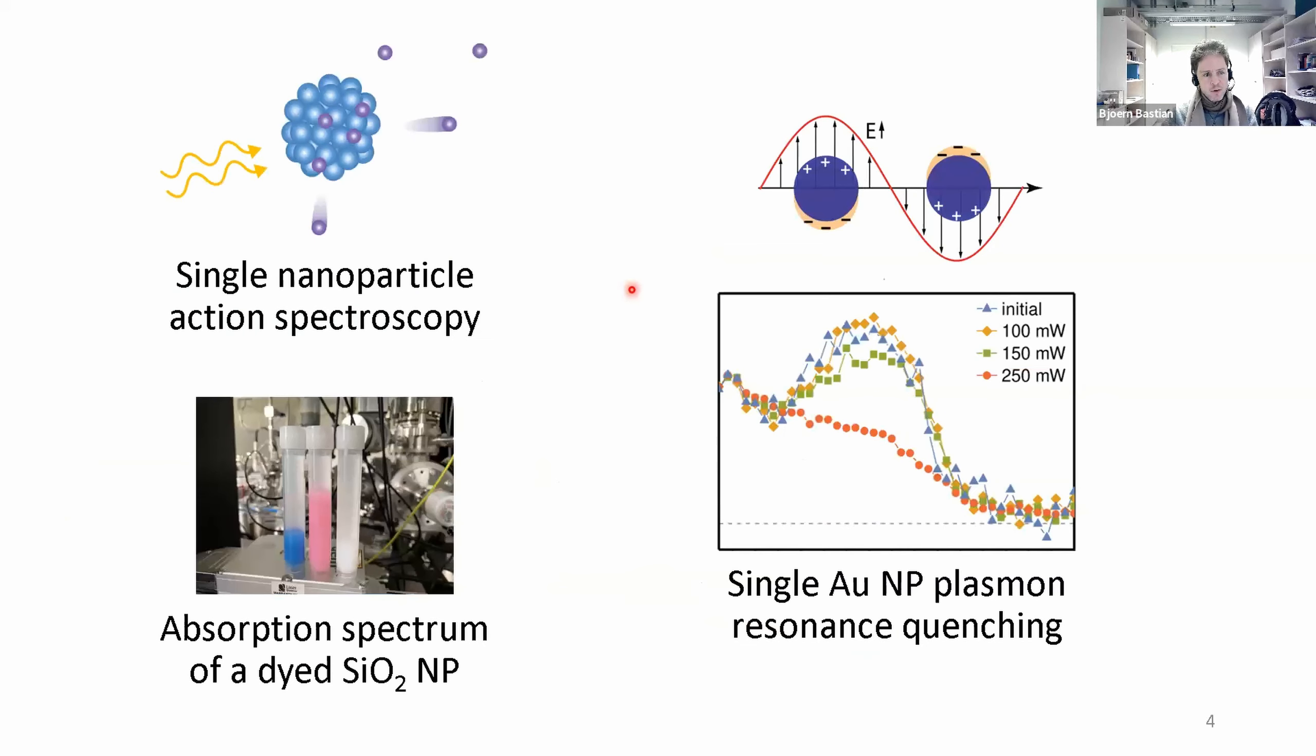In the next 20 minutes, I would like to explain what's our basic measurement principle that we call single nanoparticle action spectroscopy. In the context of the seminar, I should probably call it photothermal spectroscopy - an indirect technique where we use the heat development upon absorption. Then I will show you our first proof of principle experiments for dyed silica nanoparticles before I move to the title topic on plasmonic resonances of a single gold particle.